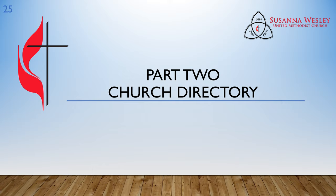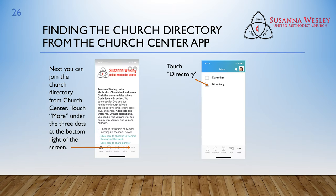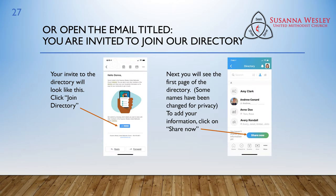Part two will explain how to get information and photos onto our church directory. You can join the church directory from the Church Center app. Touch More under the three dots at the bottom right of the screen. On the next screen, you will see two choices: calendar and directory. Touch Directory. Or, if you get an email from church inviting you to the directory, you can click on the link and it will open up to this page and you can click Join Directory.